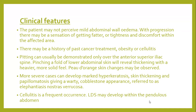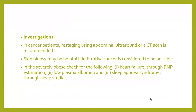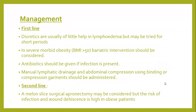Investigation: exclude cancers using abdominal ultrasound, CT scan, and skin biopsy if necessary. In severely obese patients, check for heart failure through BNP estimation, low plasma albumin, and sleep apnea syndrome. Management: diuretics are of little help in lymphedema but may be tried for short periods. For severe morbid obesity with BMI more than 50, bariatric intervention should be done. Antibiotics, manual lymph drainage, and abdominal compression via binding or compression garment should be administered. Second-line treatment includes surgical apronectomy, though the risk of infection and wound dehiscence is high.